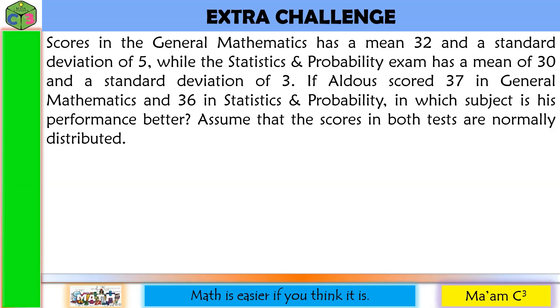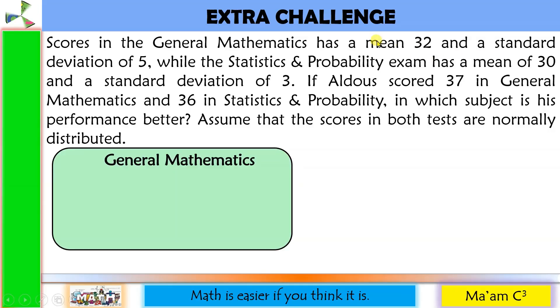Let us do extra challenge. If Aldous scored 37 in general mathematics and 36 in his statistics and probability, in which subject is his performance better? Assume that the scores in both tests are normally distributed. So let us have first the general mathematics. The mean is 32, the standard deviation is 5, and Aldous scored 37 in general mathematics. So X is equal to 37. Let us solve for the corresponding Z-value. Let us substitute 37 minus 32 divided by 5. 37 minus 32 is 5 divided by 5. This is equal to 1.